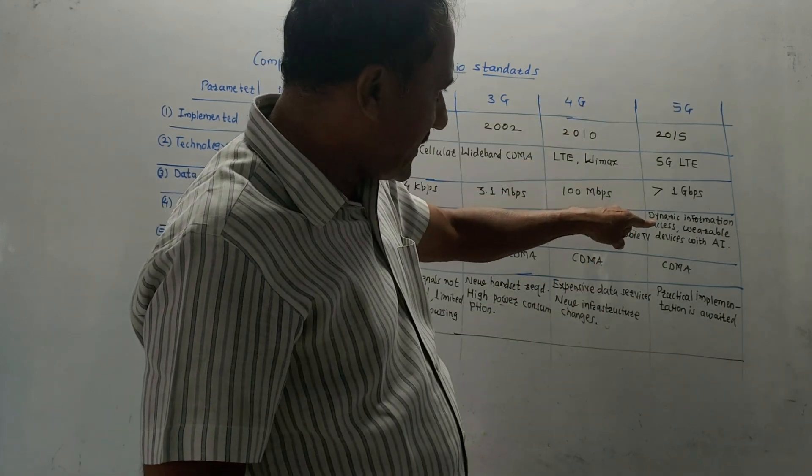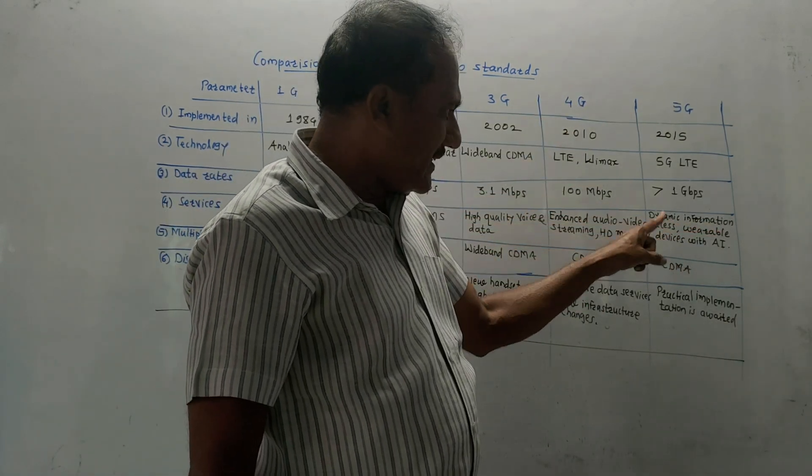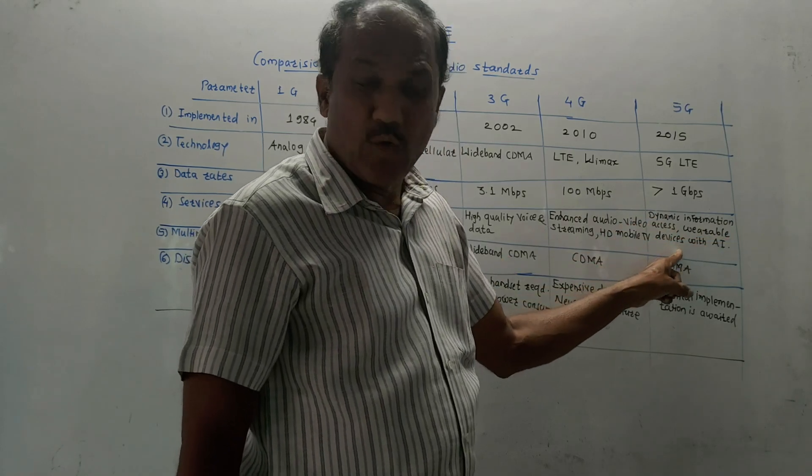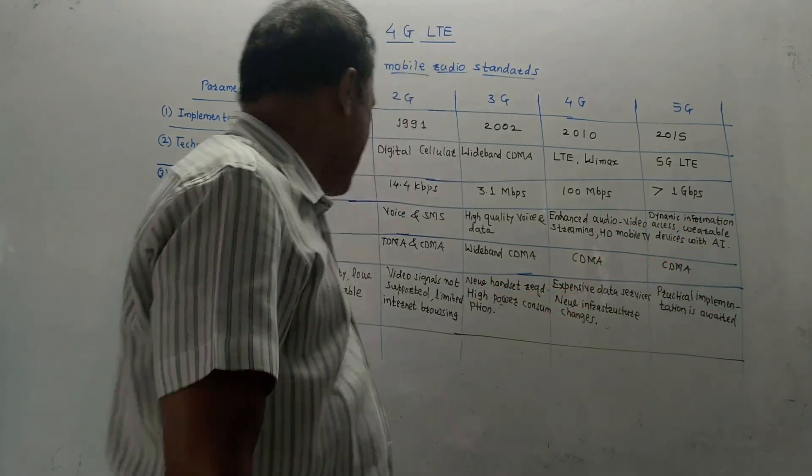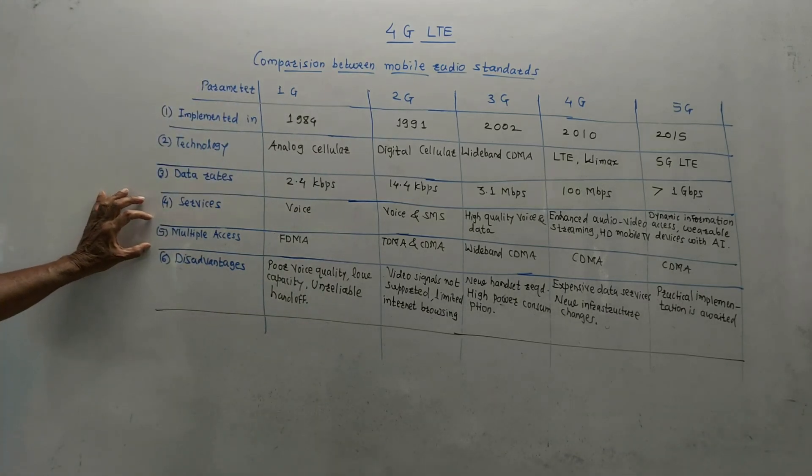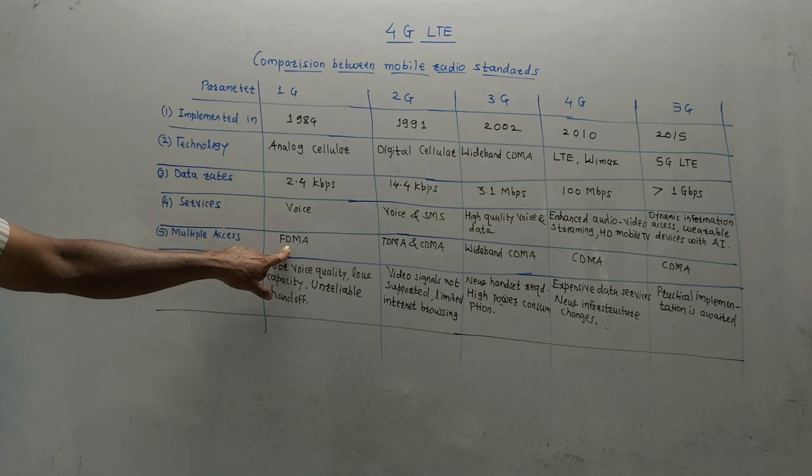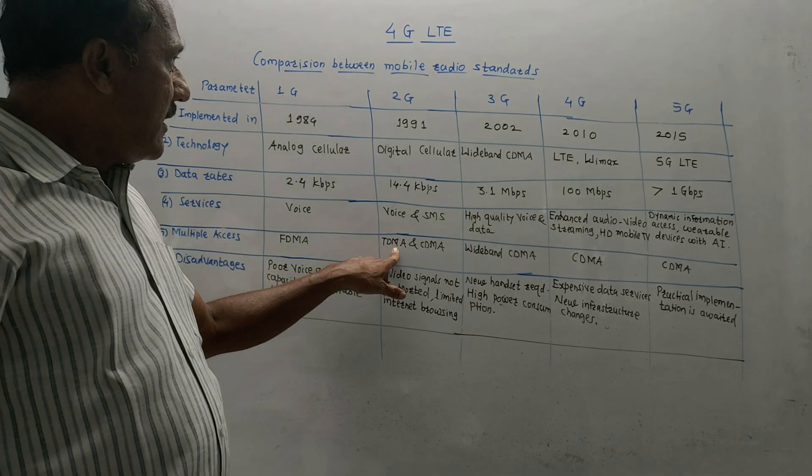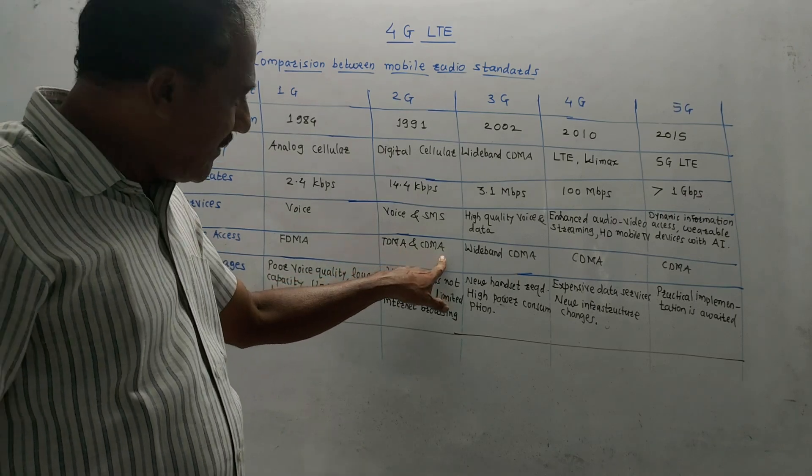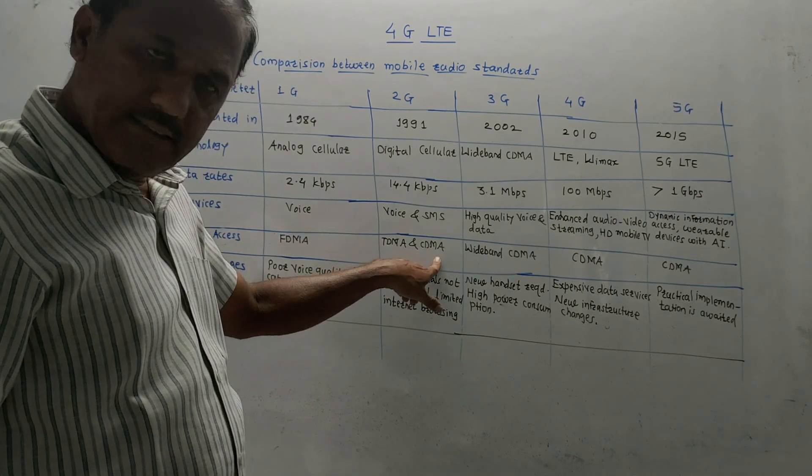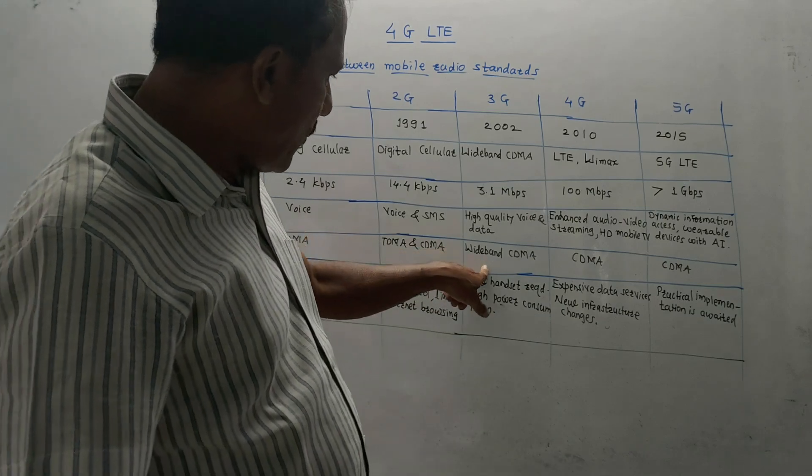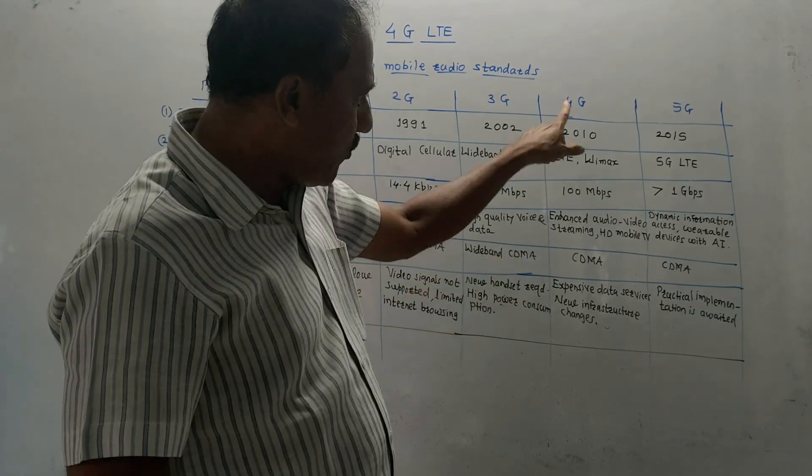Fifth generation: dynamic information access and variable devices with artificial intelligence. Next parameter of consideration is multiple access. For 1G it is FDMA, frequency division multiple access. For second G: TDMA and CDMA, time division multiple access and code division multiple access. For third: wideband CDMA. Fourth and fifth: CDMA.